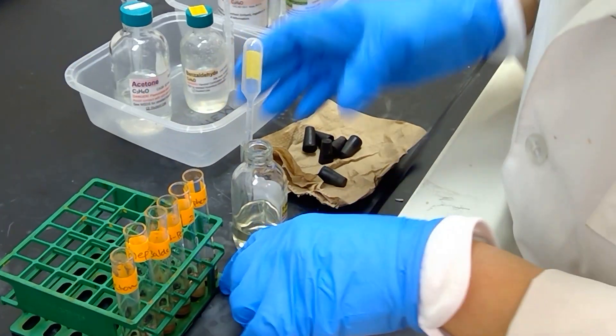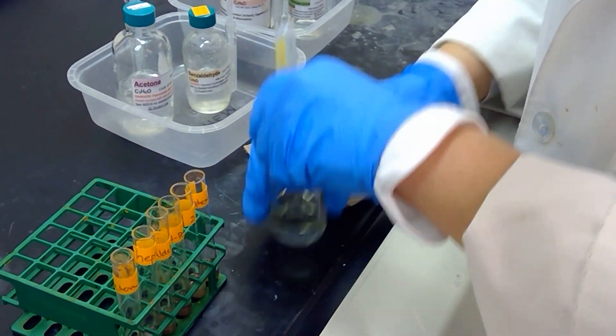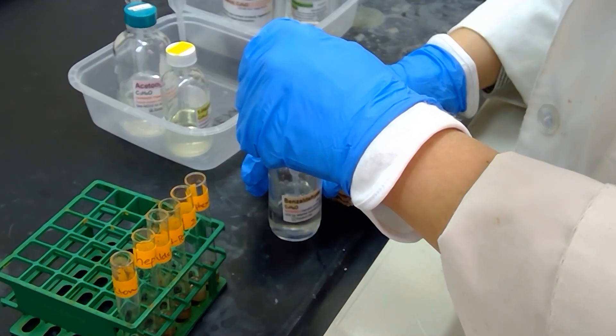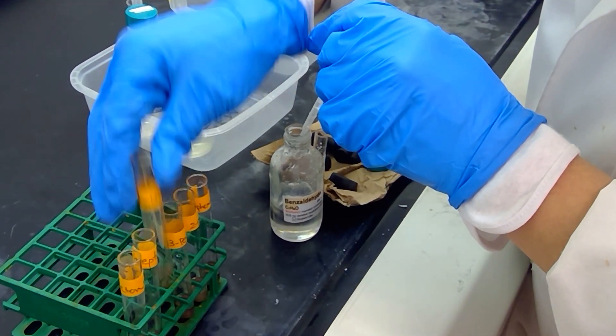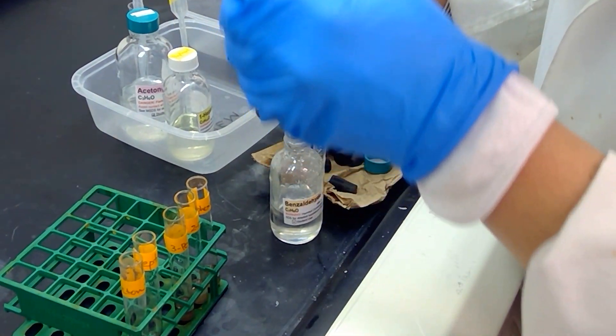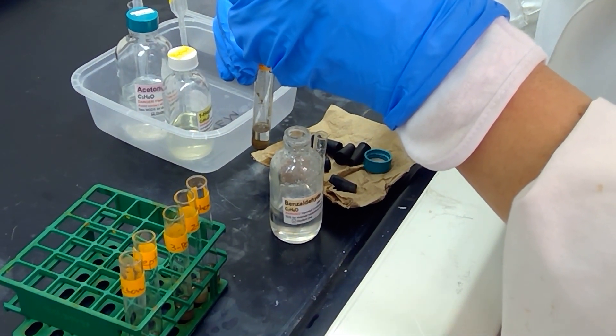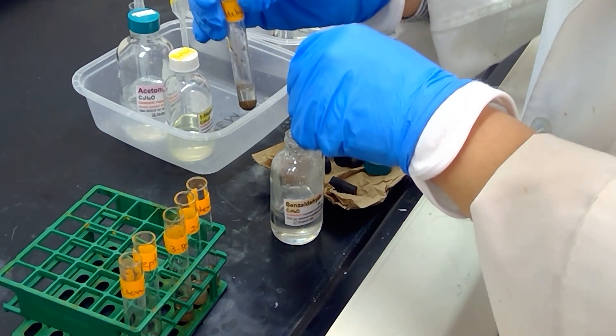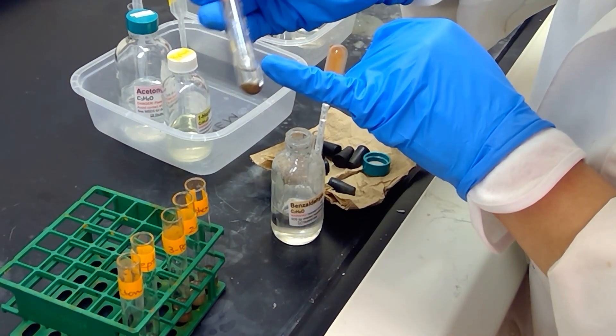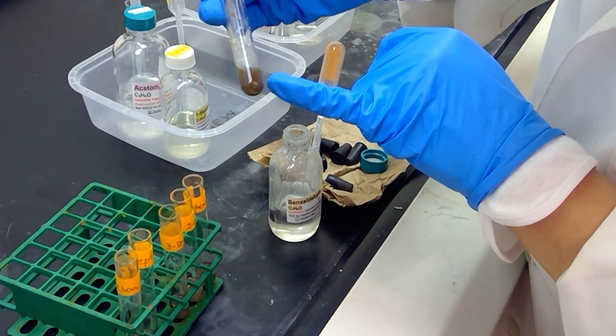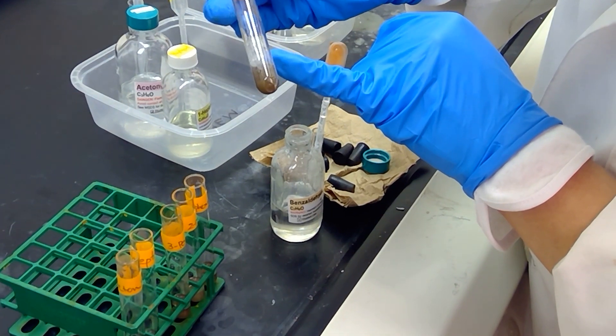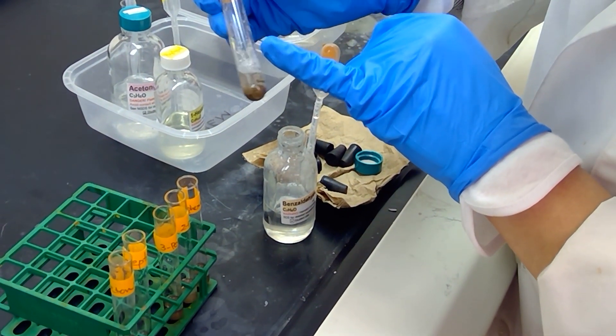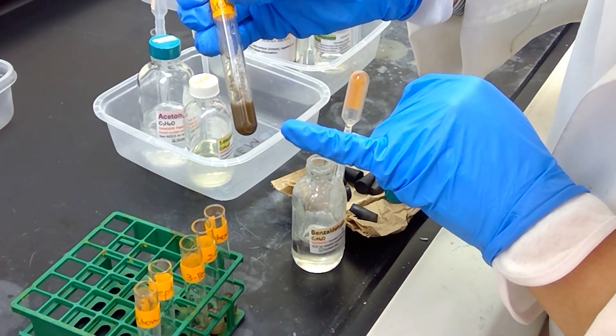I'm going to move on next to benzaldehyde, which is another aldehyde. Let's add a couple drops to our test tube and see if we get some similar situation as we did in heptanal. If you notice here, we are starting to form some precipitate towards the top of the solution, and it is rather shiny and metallic looking.